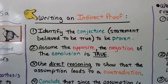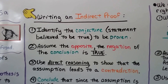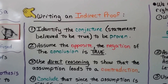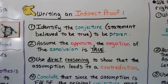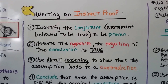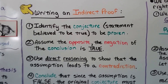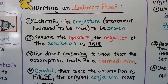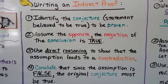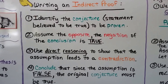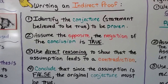Number two, we assume the opposite — the negation of the conclusion is true. Number three, we use direct reasoning to show that the assumption leads to a contradiction. Number four, we conclude that since the assumption is false, the original conjecture must be true.